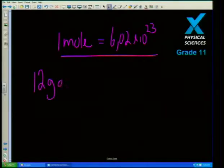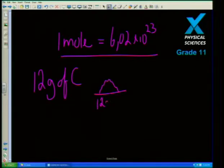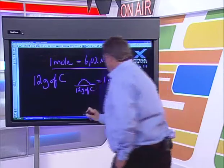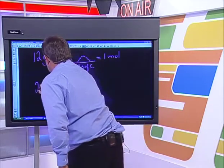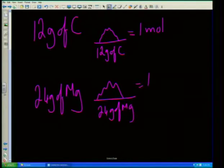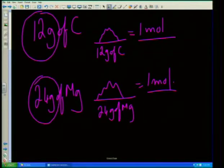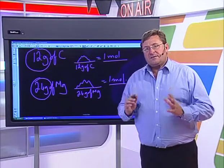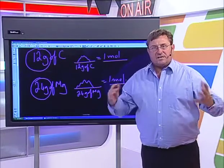If we take 12 grams of carbon, that 12 grams of carbon equals one mole. What happens if I have got 24 grams of magnesium? 24 grams also equals one mole of magnesium. Those mass values are actually representative of the relative atomic mass numbers of those particular elements. If you look in the periodic table, carbon has a relative atomic mass of 12 amu, and 24 amu represents the relative atomic mass of magnesium.